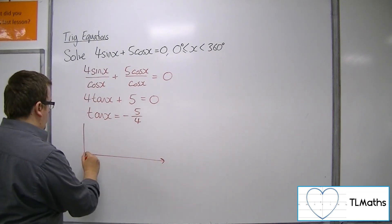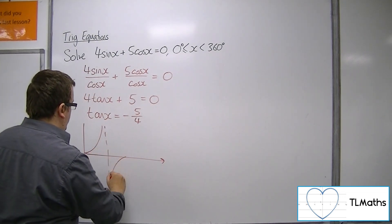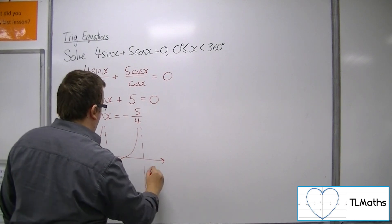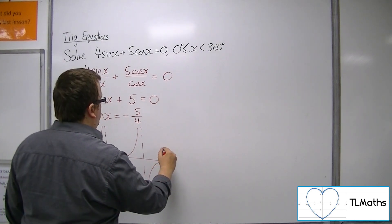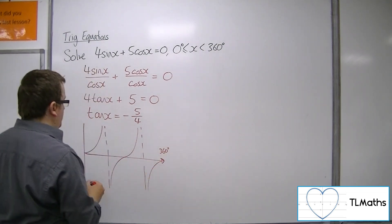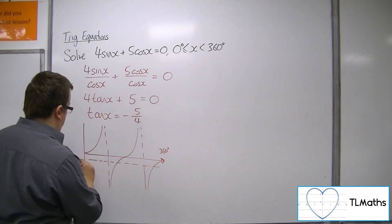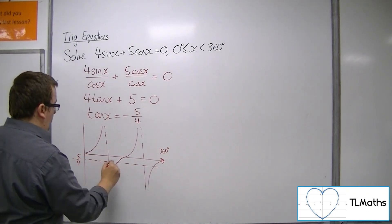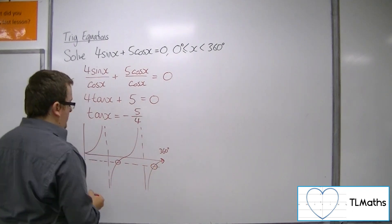So if we sketch tan between 0 and 360, minus 5 quarters somewhere down there, so we can see that we're getting two solutions here.